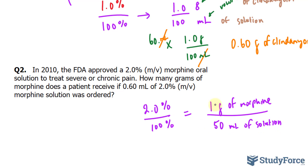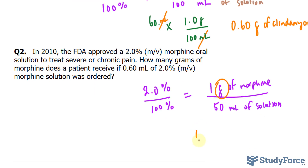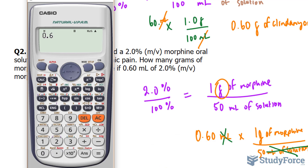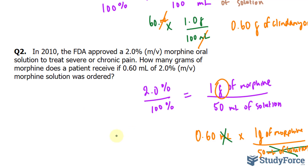Notice that I've changed this percentage into a fraction. We're looking for the mass in grams when a patient receives 0.60 milliliters. So: 0.60 milliliters multiplied by 1 gram of morphine per 50 milliliters of solution. The milliliter units cancel, and I take 0.60 divided by 50, which gives us 0.012 grams of morphine that this patient will receive.